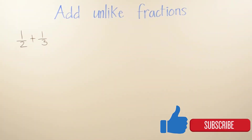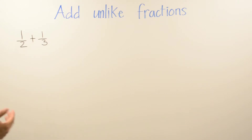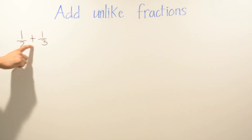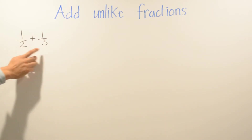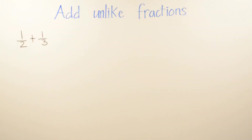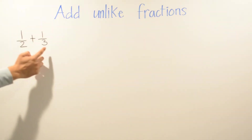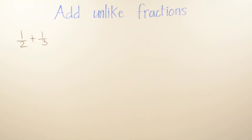In today's video we're going to be talking about adding unlike fractions. In this example we have one-half plus one-third. We cannot add them because the denominators are not common — meaning they have to be the same. To get the common denominator we need to find the least common multiple for 2 and 3. If you don't remember that, I'll leave a link on least common multiple down in the description below.